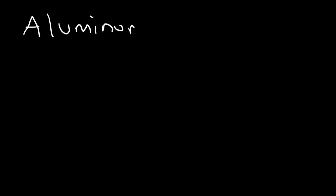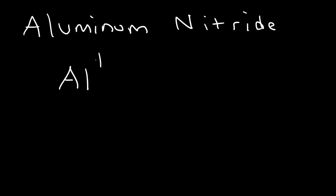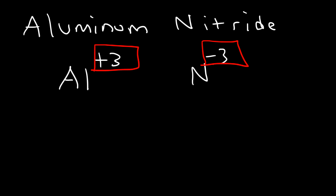Aluminum nitride: aluminum has a positive three charge. Nitride has a negative three charge. Once again the charges are the same, so you can simply write it as AlN — aluminum nitride.